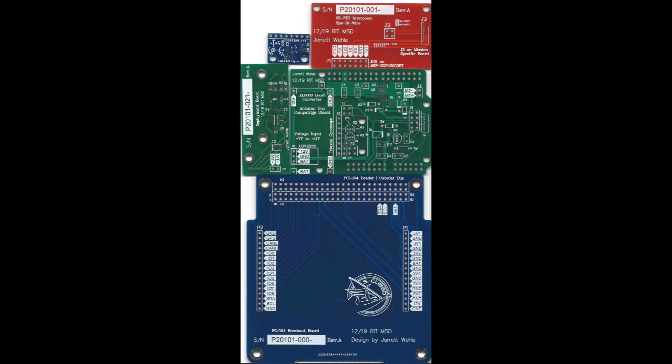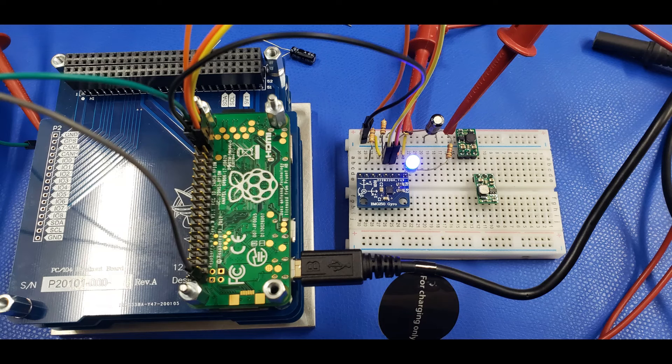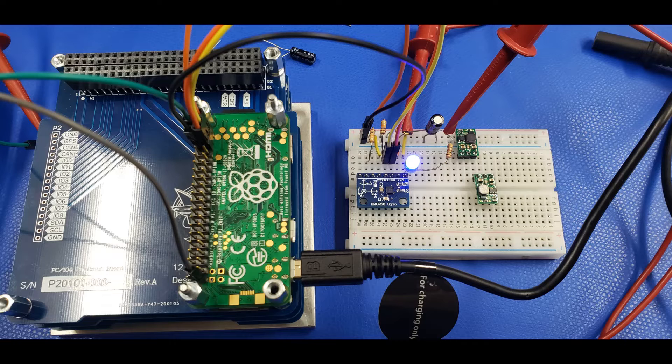The circuit boards designed were primarily as prototyping platforms for testing. For attitude determination testing, a custom board was made to mount the rate gyro. The Raspberry Pi is used to simulate a flight computer.